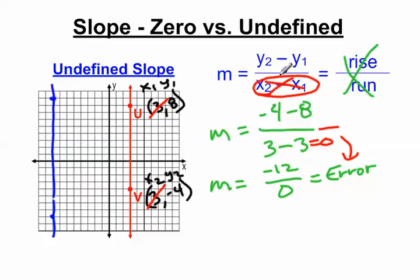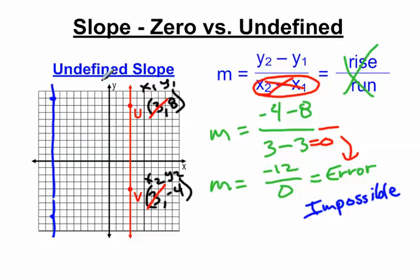And so when we say undefined, it's just impossible — you just can't do it. That's how they came up with the word undefined, and so that's an undefined slope. Hopefully this helps you understand the concept behind zero slopes and undefined slopes. I hope you have a good day. Bye-bye.